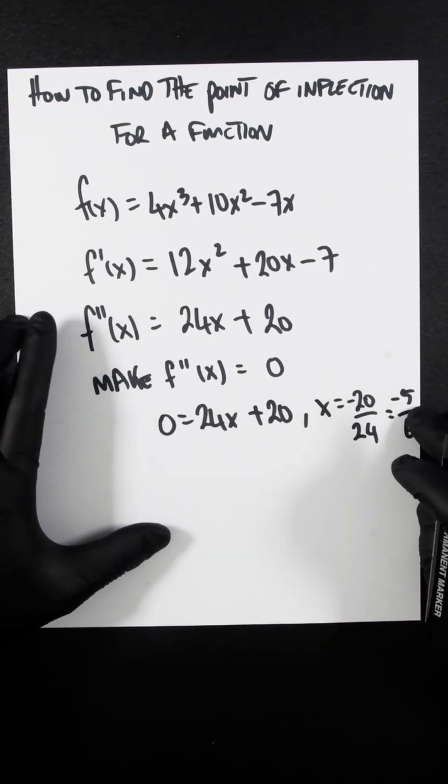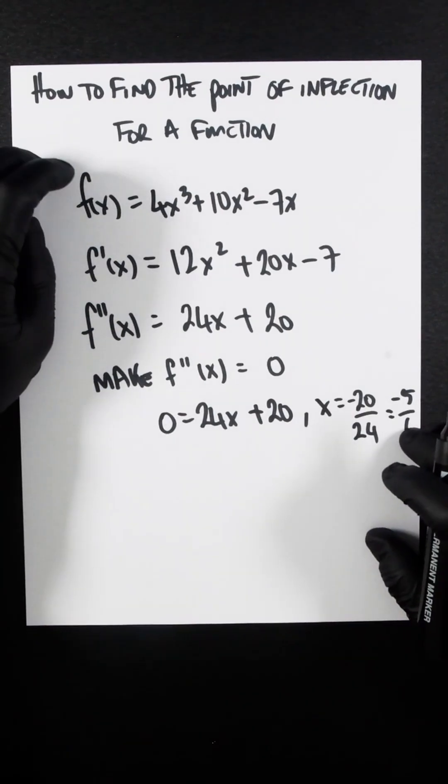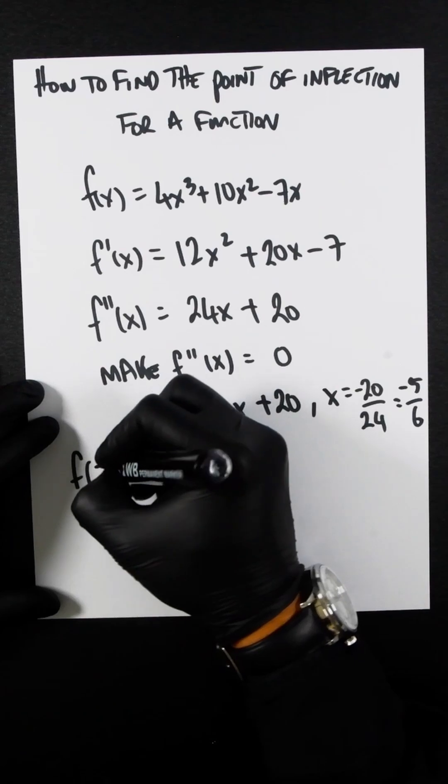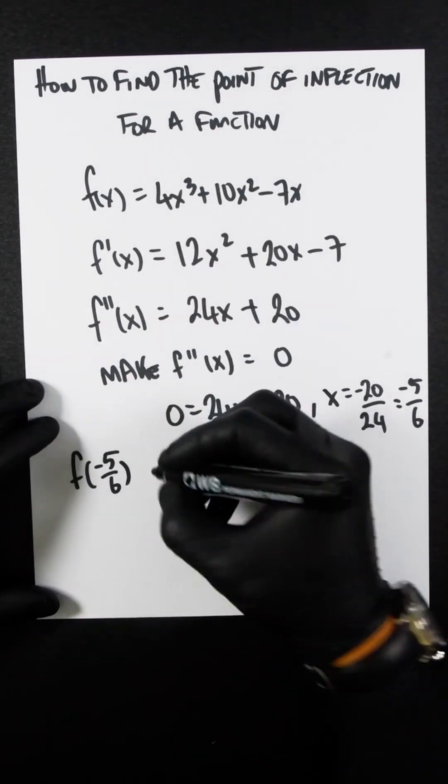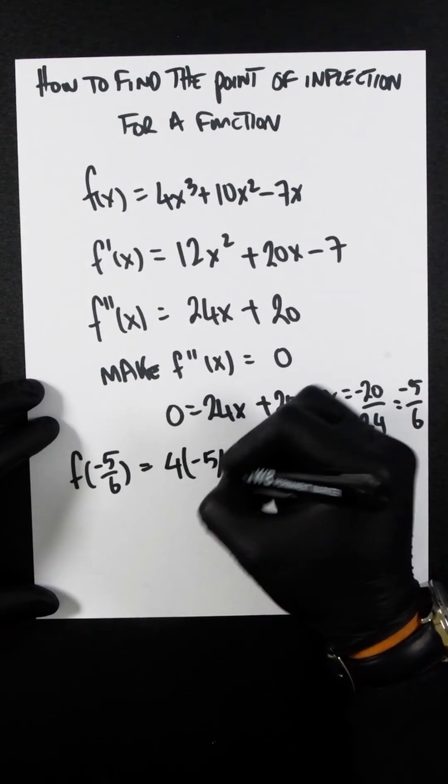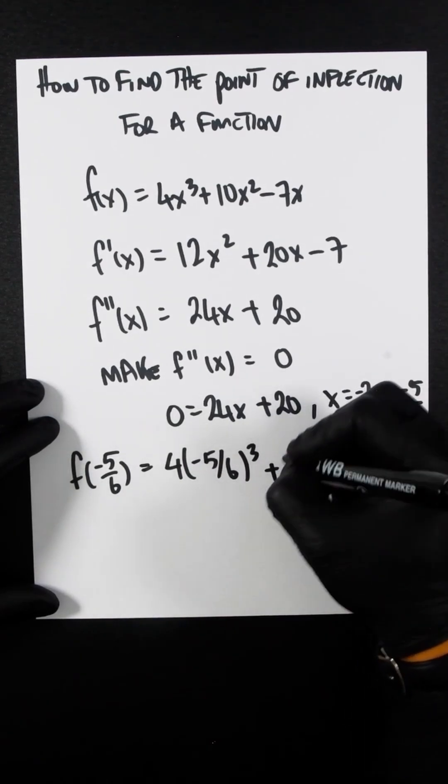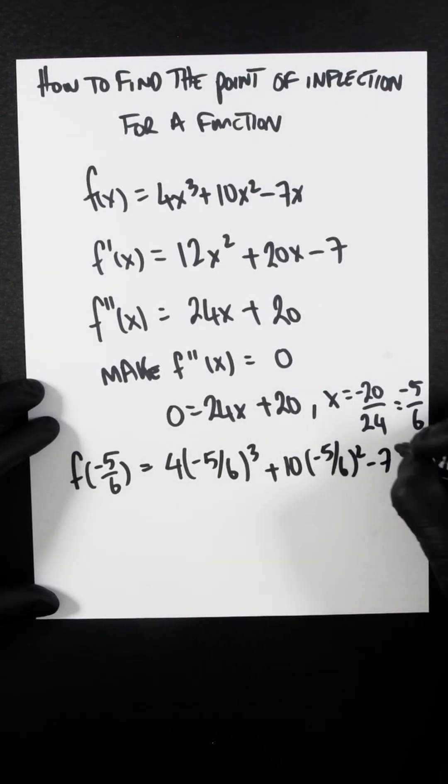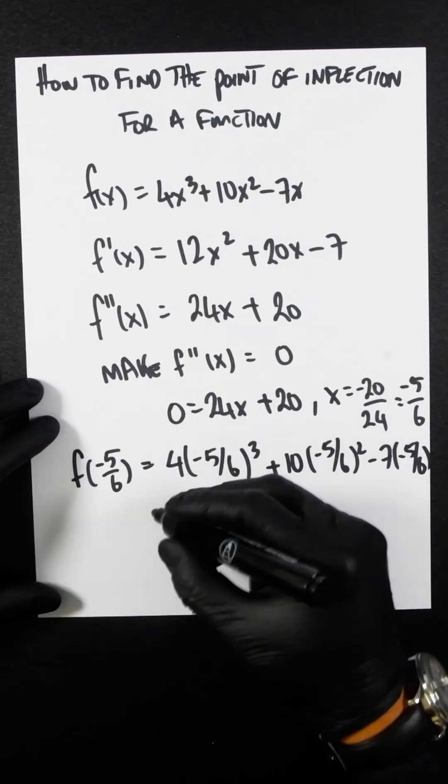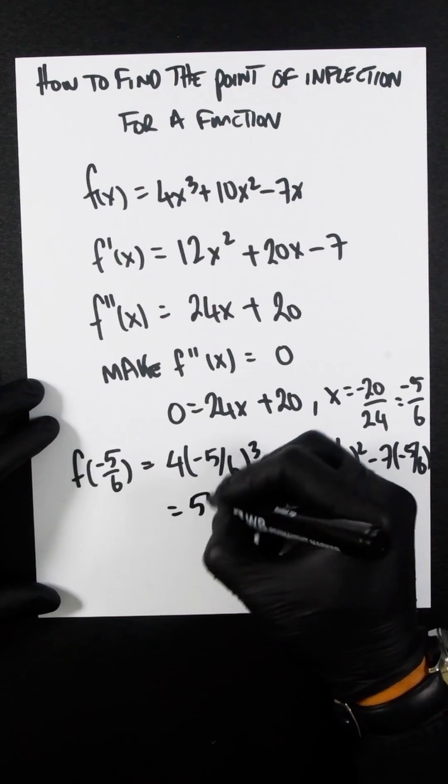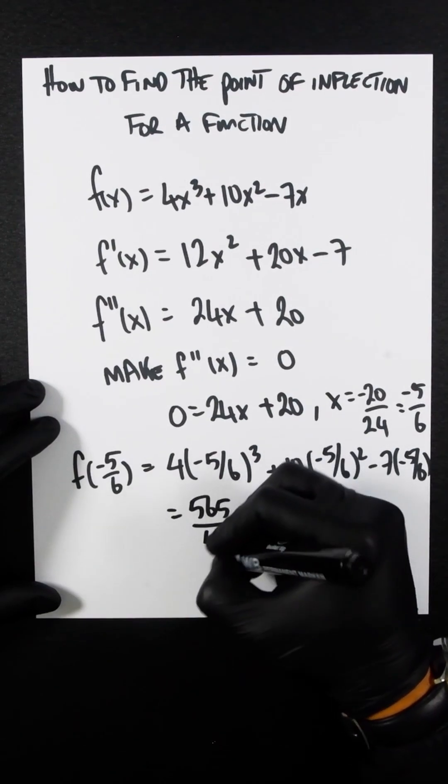So now you get this -5/6, and we'll plug it into the original function. So f(-5/6) = 4(-5/6)³ + 10(-5/6)² - 7(-5/6). Which is, if I just quickly do this in my head, that is 565/54.